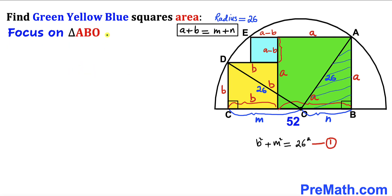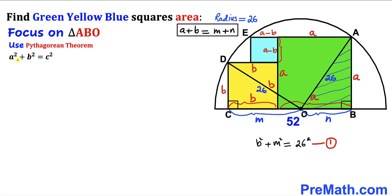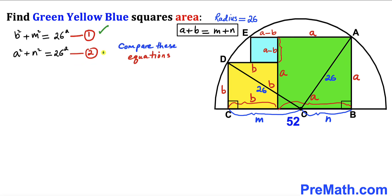Now let's focus on right triangle ABO, whose side lengths are n, a, and 26. Applying the Pythagorean theorem: a² + n² = 26². Let me call this equation number two.